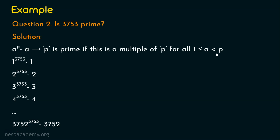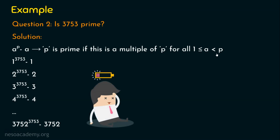It doesn't mean you can't manually work it out, but obviously it is time-consuming and takes a lot of effort. Even if you ask a computer system to do this, think how many times the program needs to run the loop. If the number is p, then the loop has to run p − 1 times, because that many times you need to verify whether the result is a multiple of p. So it is clearly a time-consuming algorithm.